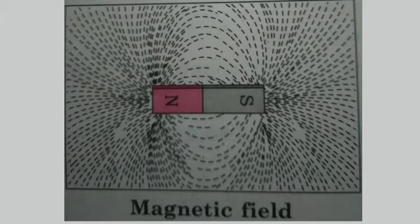Magnetic field: the region or space around the magnet in which the magnetic force acts on an object is called a magnetic field. The magnetism of a magnet acts up to a certain distance from a magnet.